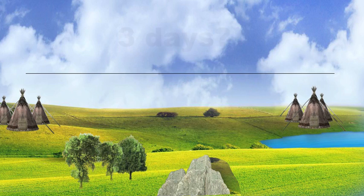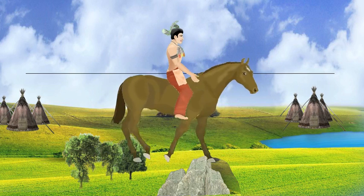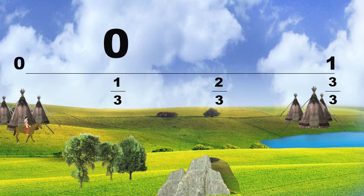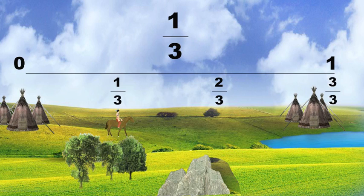But what if it only took you 3 days to travel between camps? Maybe instead of walking, you rode a fast horse. Then it would look like this. Again, when you're at your camp, you haven't gone anywhere — you're at 0. After one day, you've ridden 1 out of 3 days, so you've ridden 1 third of the way to the camp you're going to visit.